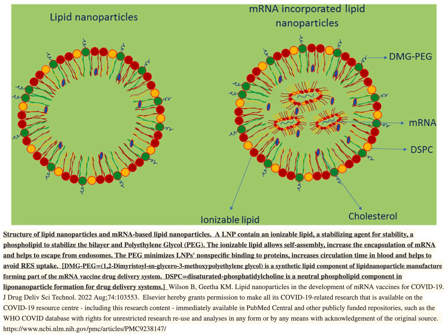LNPs contain an ionizable lipid, a stabilizing agent for stability, a phospholipid to stabilize the bilayer, and polyethylene glycol. The ionizable lipid allows self-assembly, increases the encapsulation of mRNA, and helps to escape from endosomes. The PEG minimizes LNP's non-specific binding to proteins, increases circulation time in blood, and helps to avoid RES uptake.